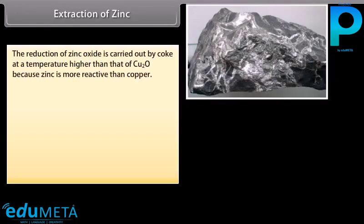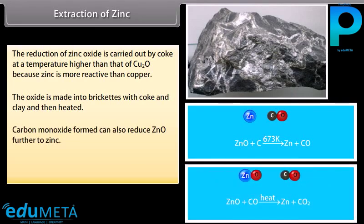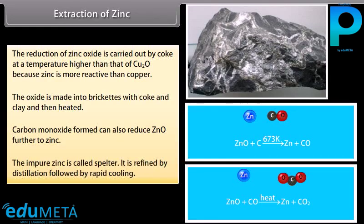Extraction of Zinc: The reduction of zinc oxide is carried out by coke at a temperature higher than that used for Cu₂O, because zinc is more reactive than copper. The oxide is made into briquettes with coke and clay and then heated. Carbon monoxide formed can also reduce ZnO further to zinc. The impure zinc is called spelter, and it is refined by distillation followed by rapid cooling.